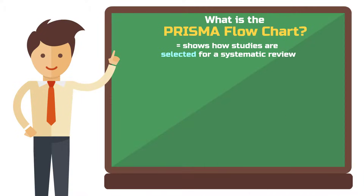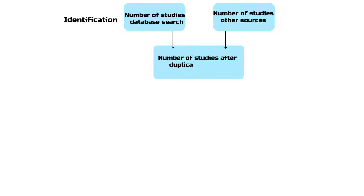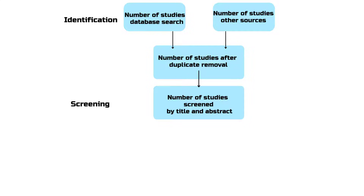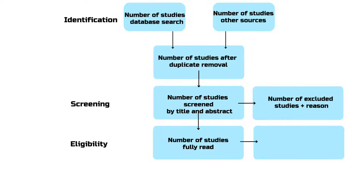It consists of four main phases. First, identification: you search databases and other sources for studies and record the total number of studies found. Second, screening: you review the titles and abstracts of the studies and filter out those that are not relevant. Third, eligibility: you now read the full text of the remaining studies and exclude those that do not fit your criteria.